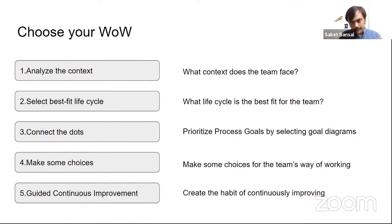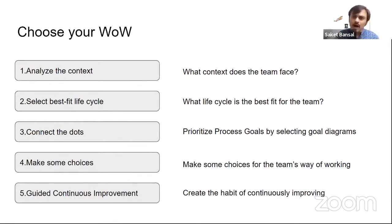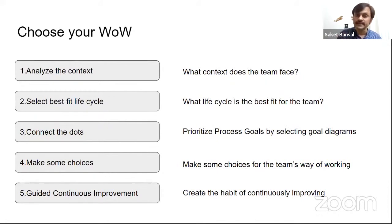Once process goals are understood, you need to make choices about how to achieve them. For coordinating activities, you could do a daily 15-minute meeting or use a digital dashboard. If your team members are spread across multiple geographies and time zones, you may prefer not to have a meeting — you'd have them look at a digital space instead. Another team working in roughly the same time zone might use a 15-minute meeting. That is how choices are made. Even if the lifecycle is the same, different teams can have different ways of achieving the same process goal depending on their context. That is the fourth step.